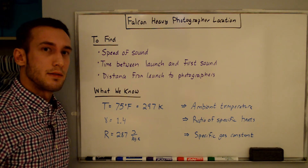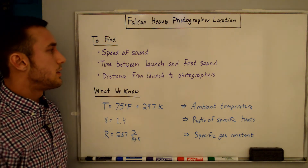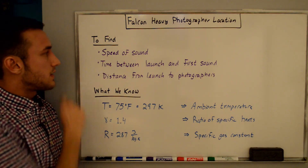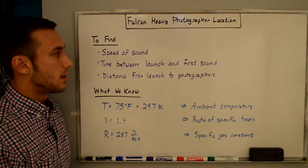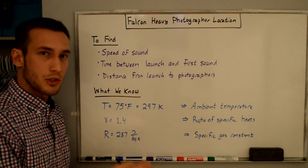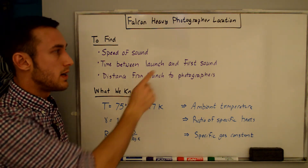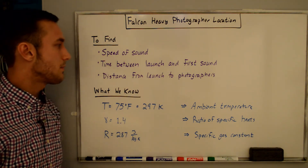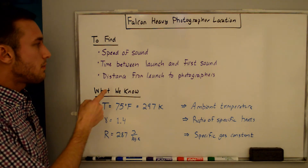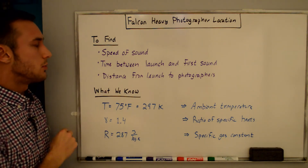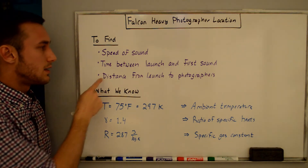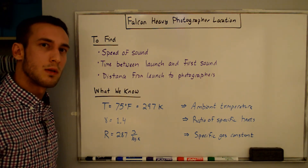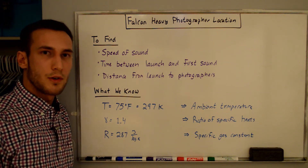So what do we need to find? The first thing we need to find is the speed of sound. The second thing is the time between the launch start and when we hear the first sound in the video that the photographer is taking. From those two we will be able to calculate the distance from the launch to the photographer, and we'll check it with Google Maps.